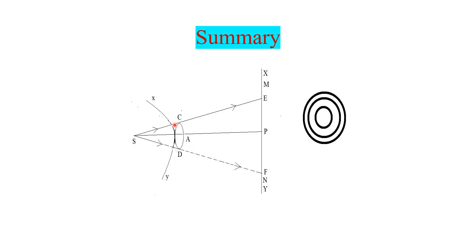As the zones are cut off, the remaining light is exposed and forms a bright spot. In the absence of the disk, bright and dark lines alternately form on the screen EF at point P.